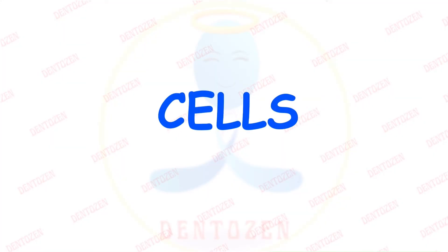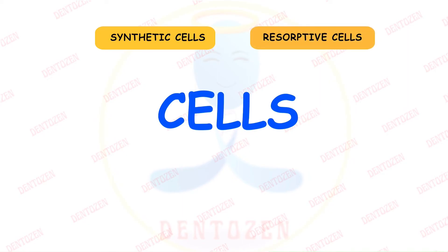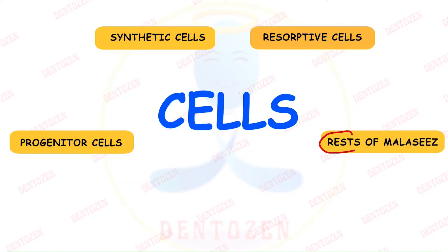There are five types of cells in the PDL. First, synthetic cells which form something. Second, resorptive cells which destroy something. Third, progenitor cells which give birth to something. Fourth, rests of Malassez which are resting, inactive cells. And fifth, defense cells of the PDL.